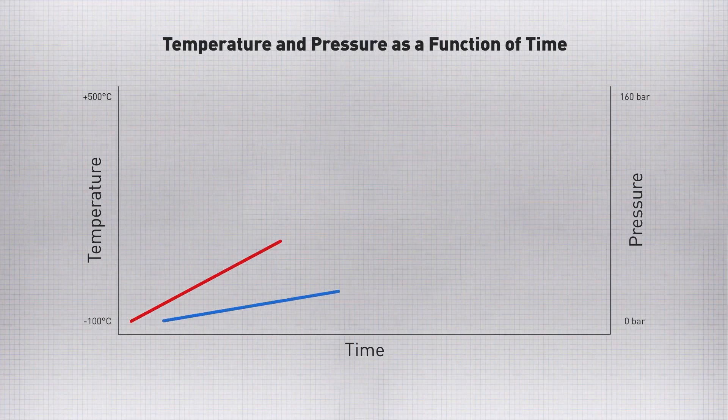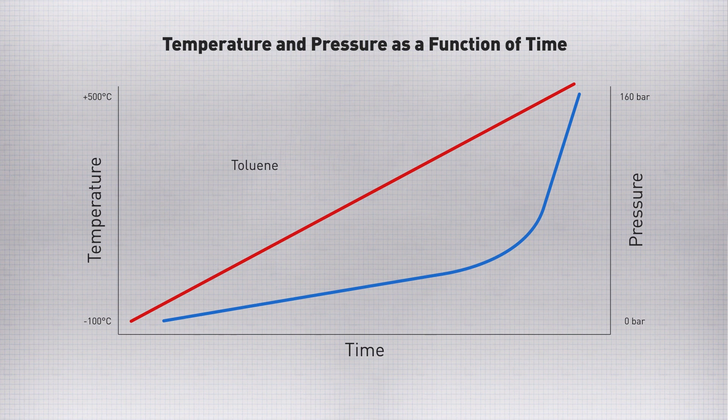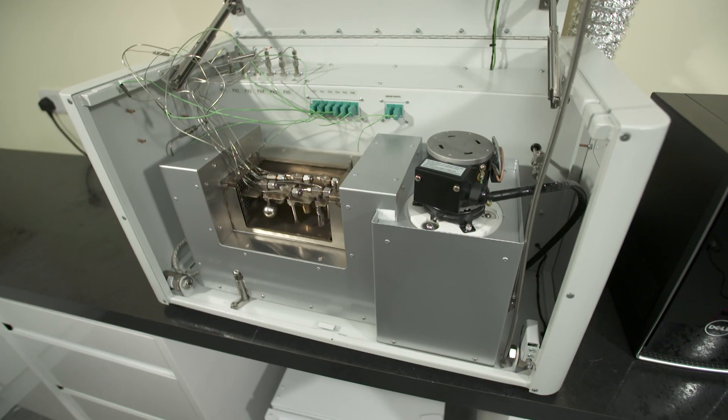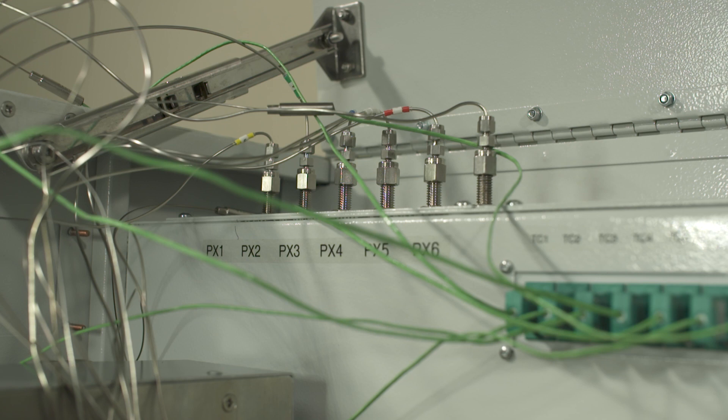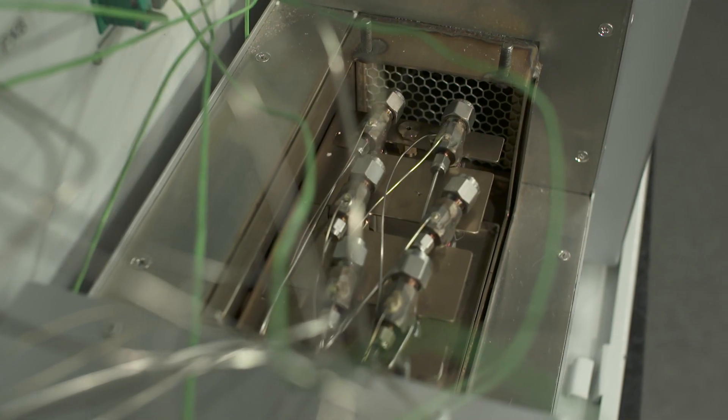Samples can be tested from sub ambient to 500 degrees centigrade with pressure range to 160 bar. The system is a rugged explosion proof design allowing both scanning and isothermal testing.